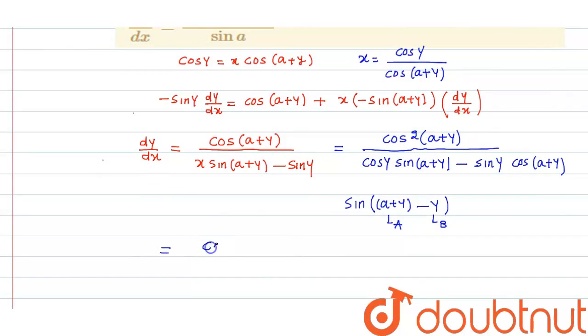So what we get, cos squared(a + y) upon, this becomes sin(a + y) minus y. This is equal to sin a. So this becomes sin a.